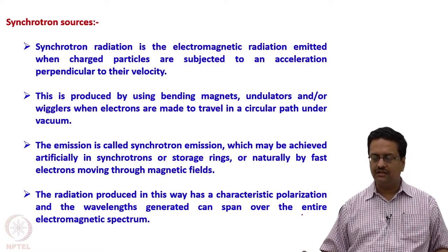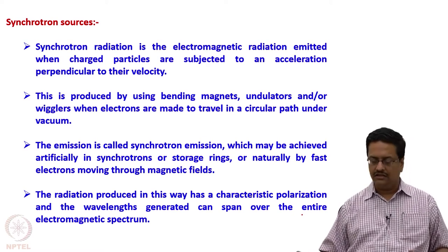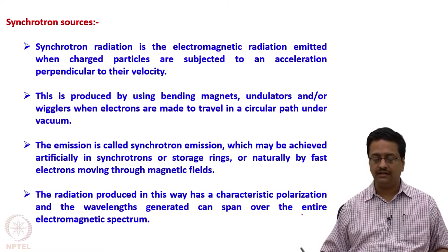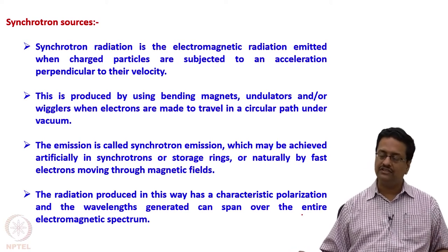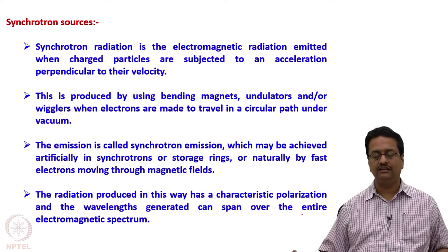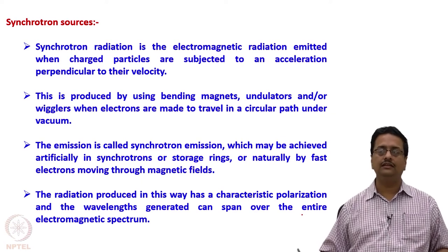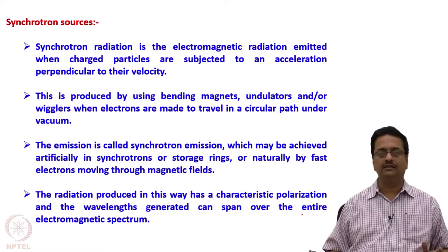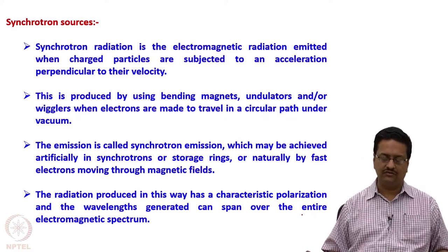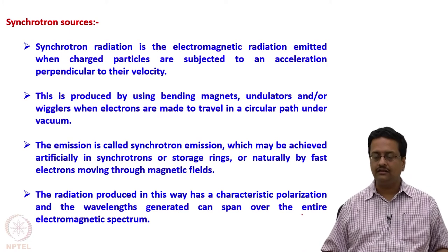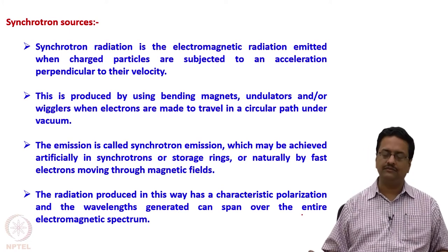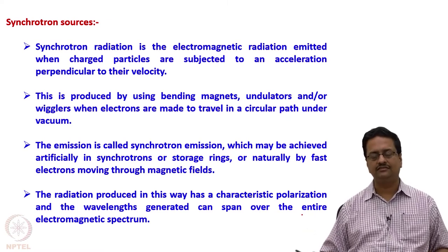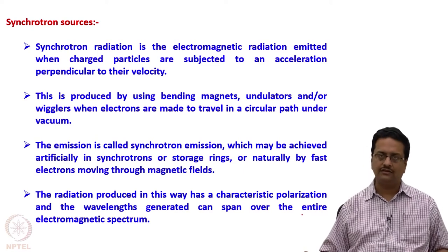The radiation produced in this way has characteristic polarization, and the wavelength generated can span over the entire range of the electromagnetic spectrum depending on the strength of the magnets, undulators, or wigglers used to bend the highly accelerated electrons. One can do experiments in the UV region, the visible region, the IR region, and so on. For X-ray crystallography, we use these synchrotron facilities in the wavelength range of about 0.2–0.3 Å to 1.8–2.0 Å.